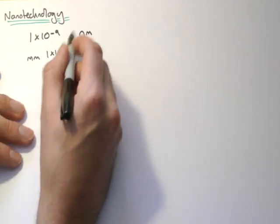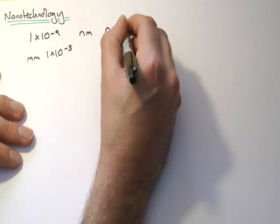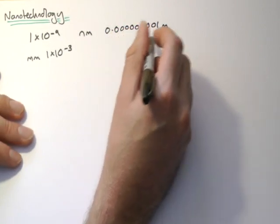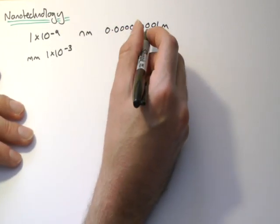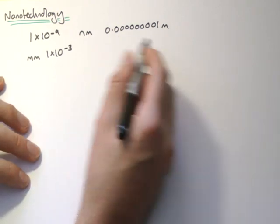You could have nanograms as well if you wanted, but we're talking about nanometers. If I wrote that out, it would be 0.000000001 meters. To give you an idea, the size of one atom is probably about a tenth of a nanometer. Roughly, so you could fit 10 atoms into the size of a nanometer.